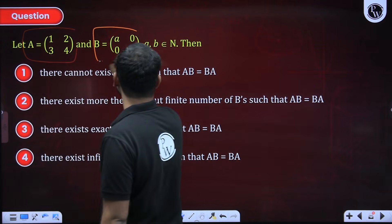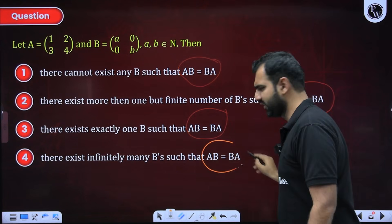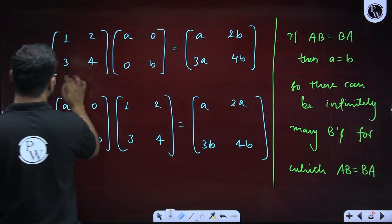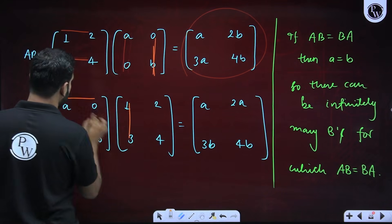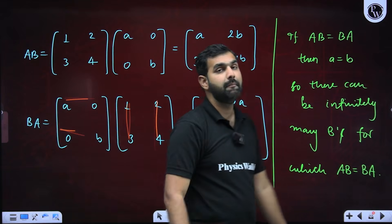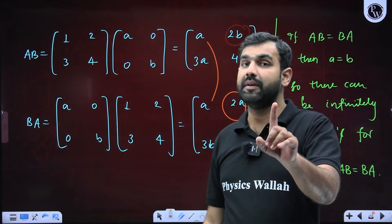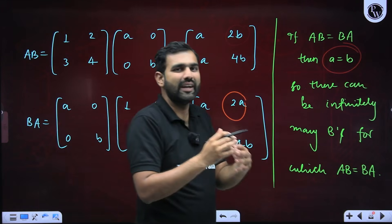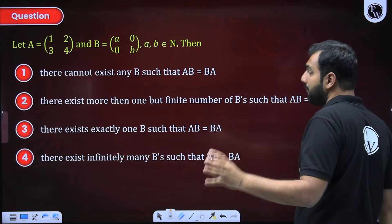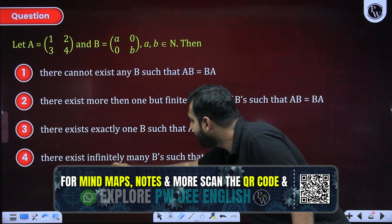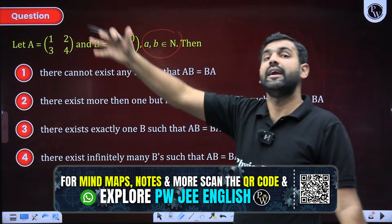Next: vectors A and B are given as specific matrices where a and b are natural numbers. We need to find conditions for AB = BA. Computing AB and BA by matrix multiplication and comparing entries, we find 2b = 2a, so a must equal b. But a and b can be any natural number, so replacing a with 1, 3, 5, and so on gives infinitely many possibilities. This means there exist infinitely many matrices B such that AB = BA.